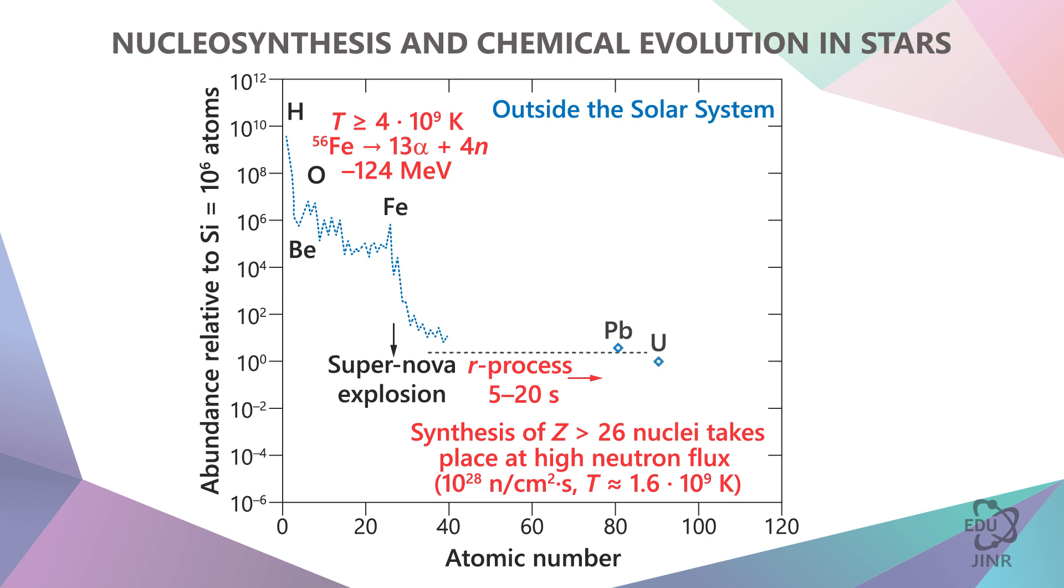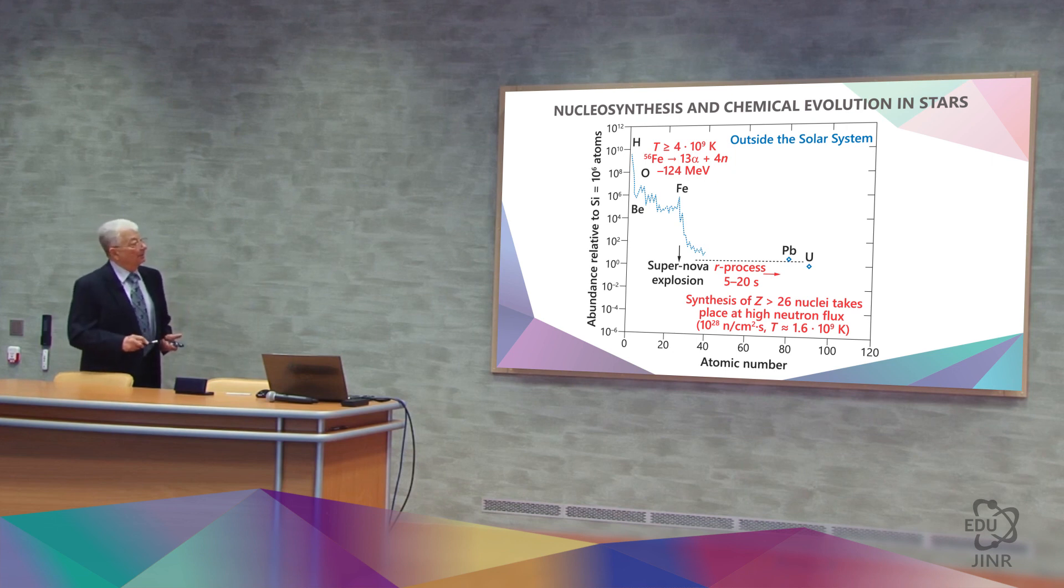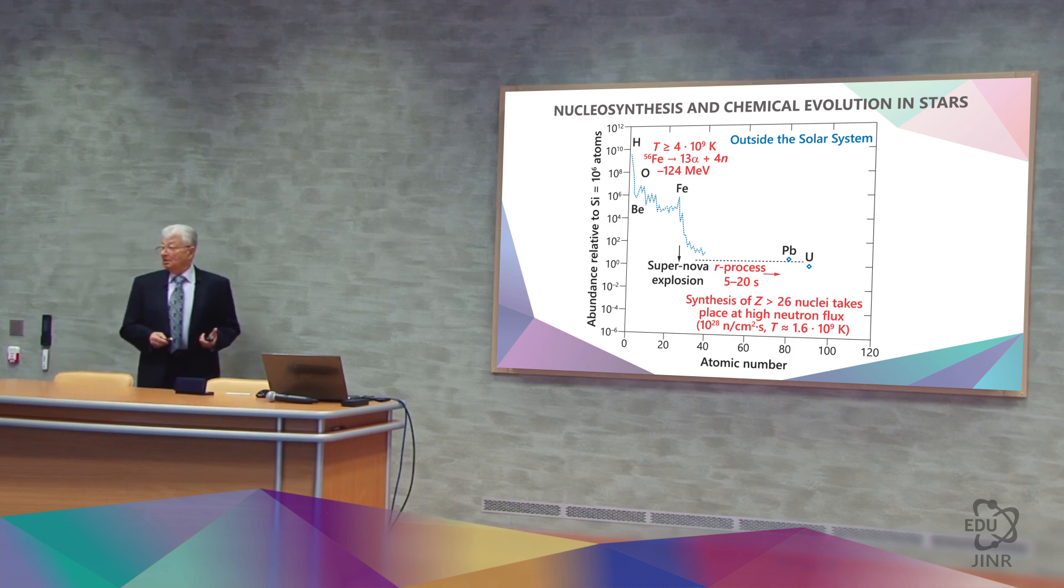Nucleosynthesis is in progress and heavier elements are obtained. We reach uranium. And we understand that after the combustion stage, the explosion leads to movement to the right. This is also caused by some residual effects, which occur due to the fact that neutrons are gradually being captured, that is, the so-called slow process or S process. But we can obtain uranium only as a result of an explosion.